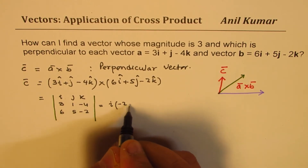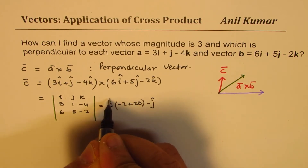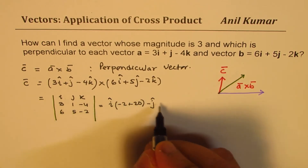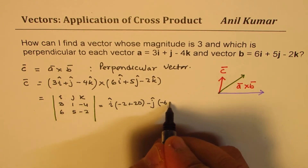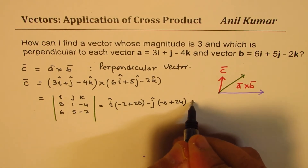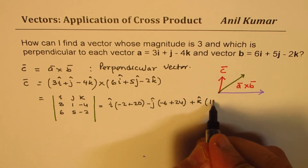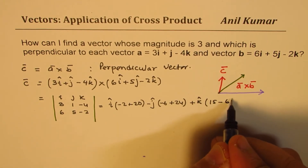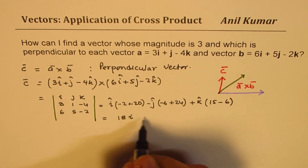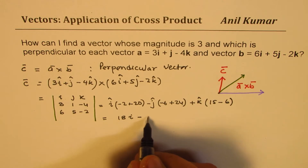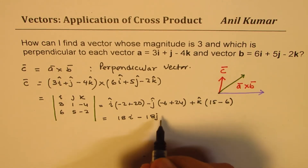We get the i component which is −2 + 20, minus j which is −6 + 24, plus k which is 15 − 6. So this gives us 18i, minus 18j, and 9k.